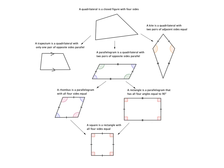Now we get to the really interesting ones — the parallelograms. All of these shapes are parallelograms, and parallelograms have got two pairs of parallel sides. One pair of opposite sides is parallel, and the other pair of opposite sides is also parallel. All shapes in this family have those two pairs of parallel sides.